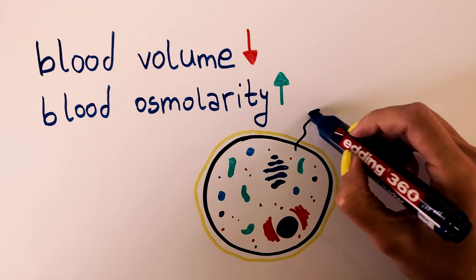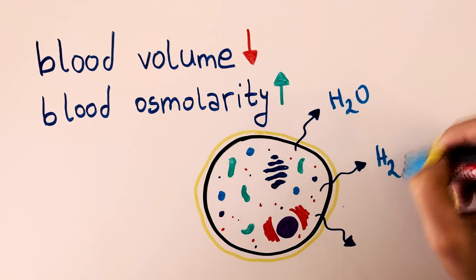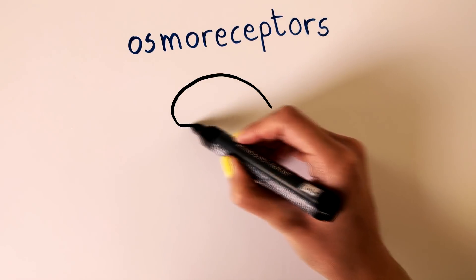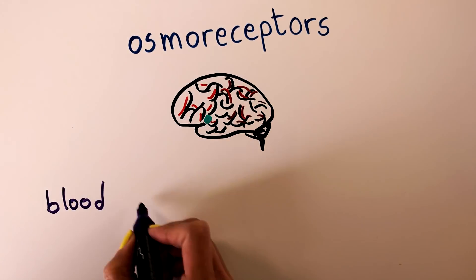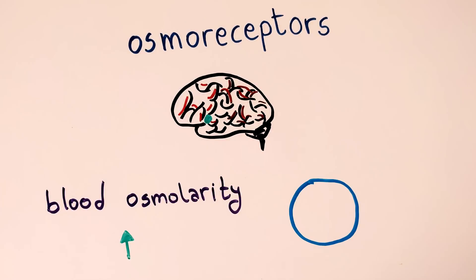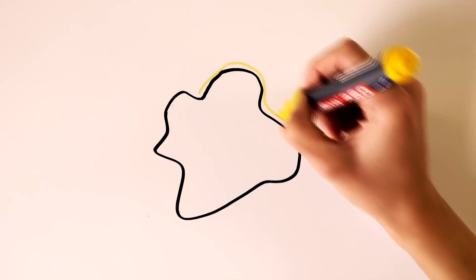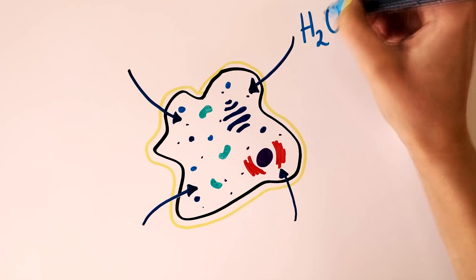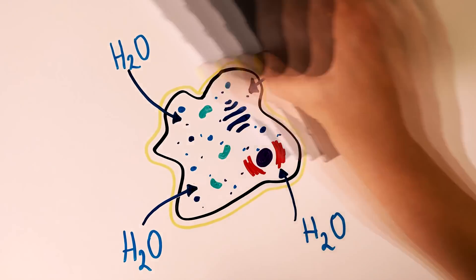They are located in the thirst center of the brain in the hypothalamus. They monitor the blood osmolarity and when there is an increase it triggers the hypothalamus to transmit signals and to in turn make us drink water. By drinking, water comes back into the cells, the electrolyte equilibrium, blood volume and blood pressure are established again and our body can function properly.